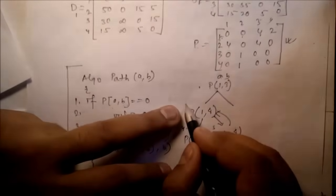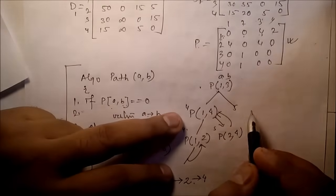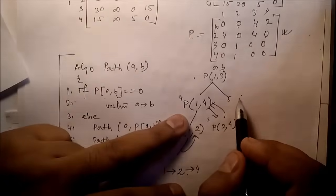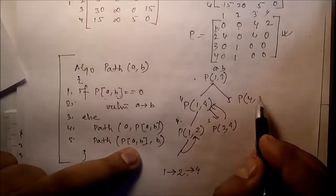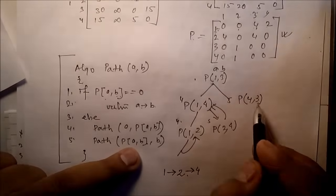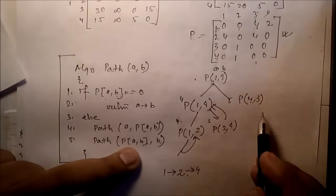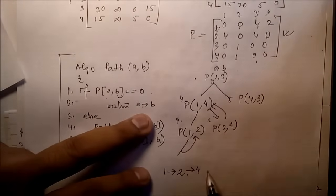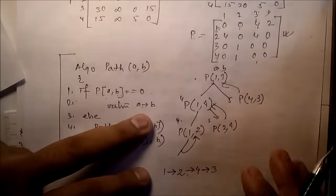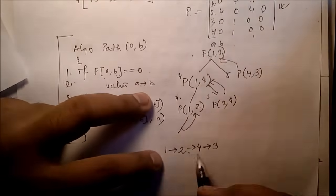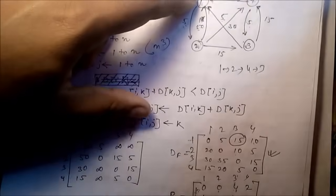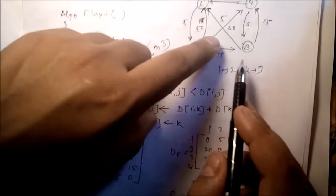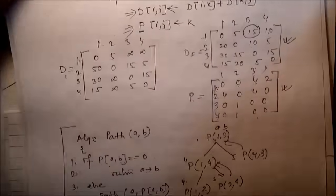Now for the next call: path(P[1][3], 3) = path(4, 3). P[4][3] is zero, so the condition is true — there is a direct path from 4 to 3. Returning back, to move from node 1 to node 3 we follow the route: 1 → 2 → 4 → 3. First move 1 to 2, then 2 to 4, then 4 to 3. And that is the end of this particular video, thank you very much.